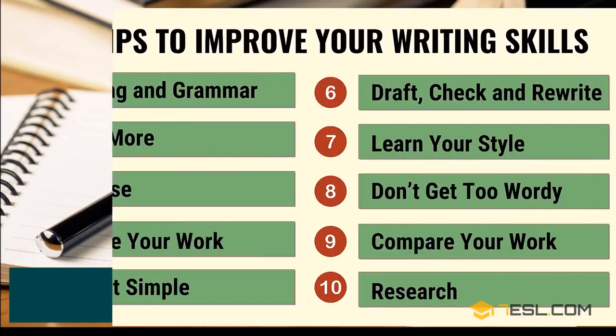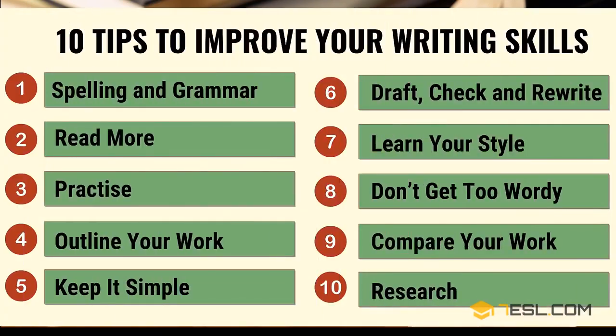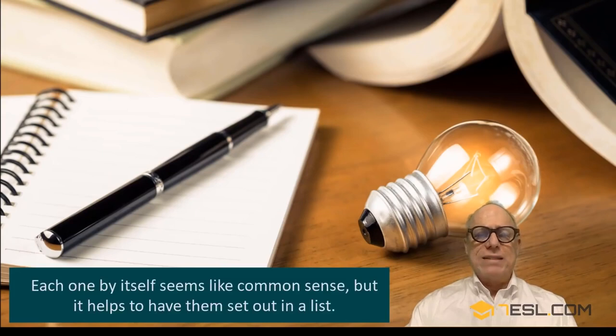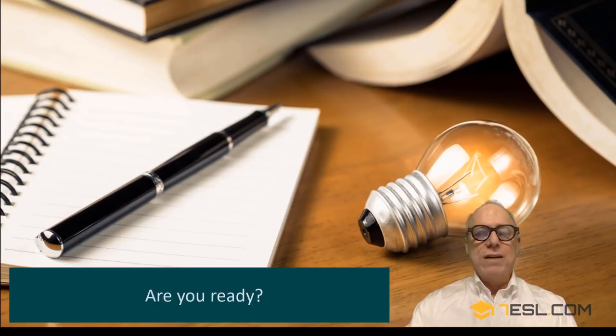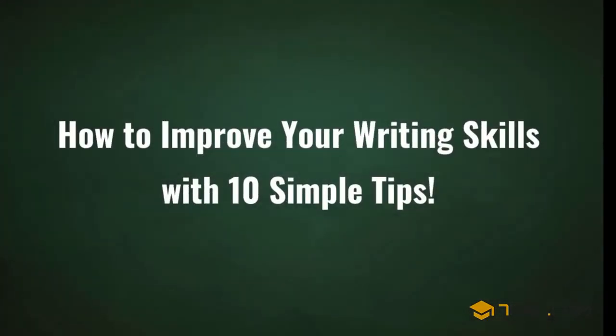Here, we have 10 tips that, if you apply them, will usually end up making your piece of writing better than it was before. Make an outline. Keep it simple. Sweat the little details, like spelling and grammar. Each one by itself seems like common sense, but it helps to have them set out in a list. Are you ready? How to improve your writing skills with 10 simple tips.